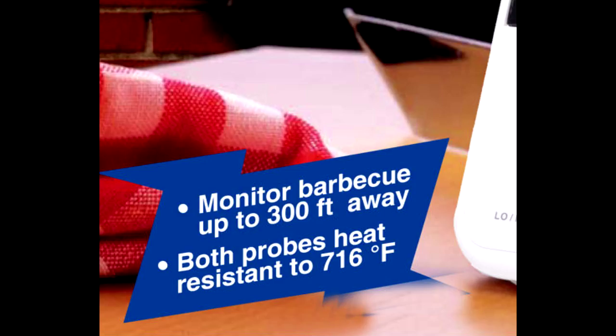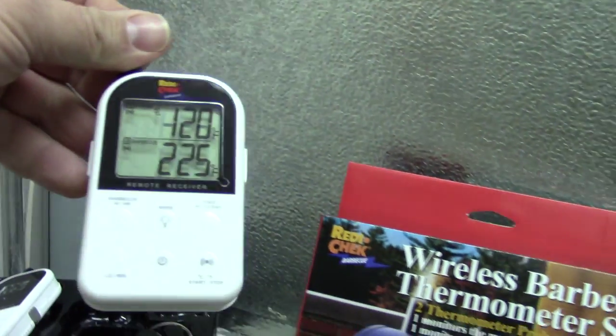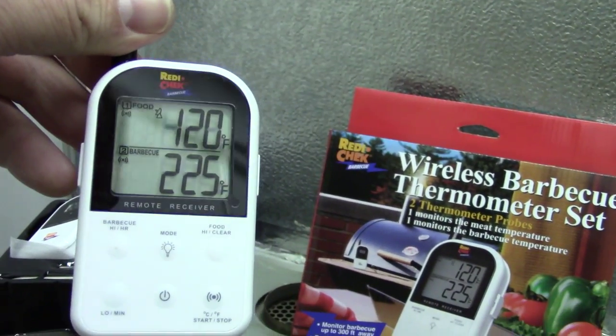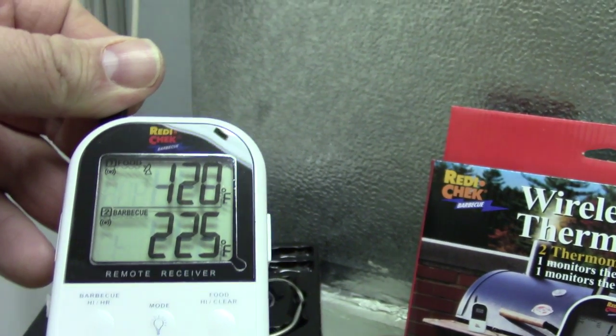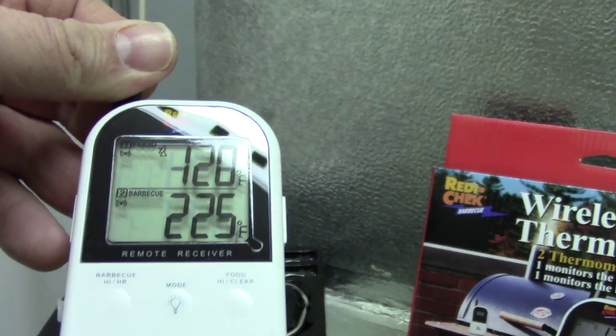And this one is 300 feet. You can be in your kitchen or down in your living room or wherever and you can monitor your water line's temperature. So we're going to hook it up and we'll be back in a second.